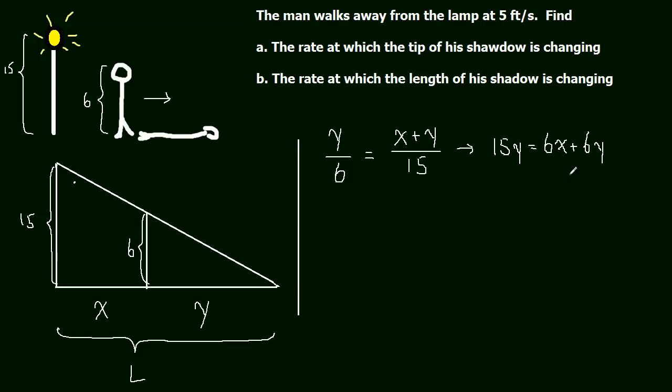Now let's get y to equal something in x. So we subtract the 6y from both sides, we get 9y equals 6x, and y equals 2/3 x. Great, we solved for y in terms of x, so we eliminated one variable.